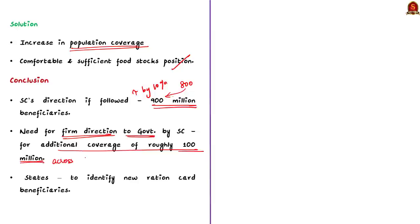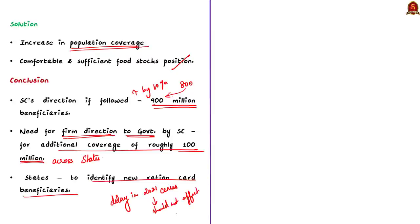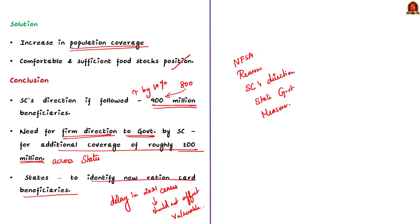Only then can states start identifying new ration card beneficiaries. The author concludes that failure in conducting the 2021 census should not affect the vulnerable population anymore. In this discussion, we saw about the National Food Security Act, public distribution system, reasons for exclusion of vulnerable people, Supreme Court's directions, government's response, state government efforts, and measures needed to address this issue.